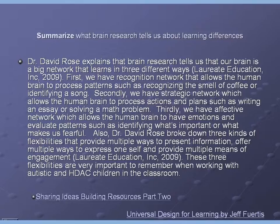Dr. David Rose explains that brain research tells us our brain is a big network that learns in three different ways. First, we have the recognition network, which allows the human brain to process patterns such as recognizing the smell of coffee or identifying a song. Secondly, we have the strategic network, which allows the human brain to process actions and plans such as writing an essay or solving a math problem.